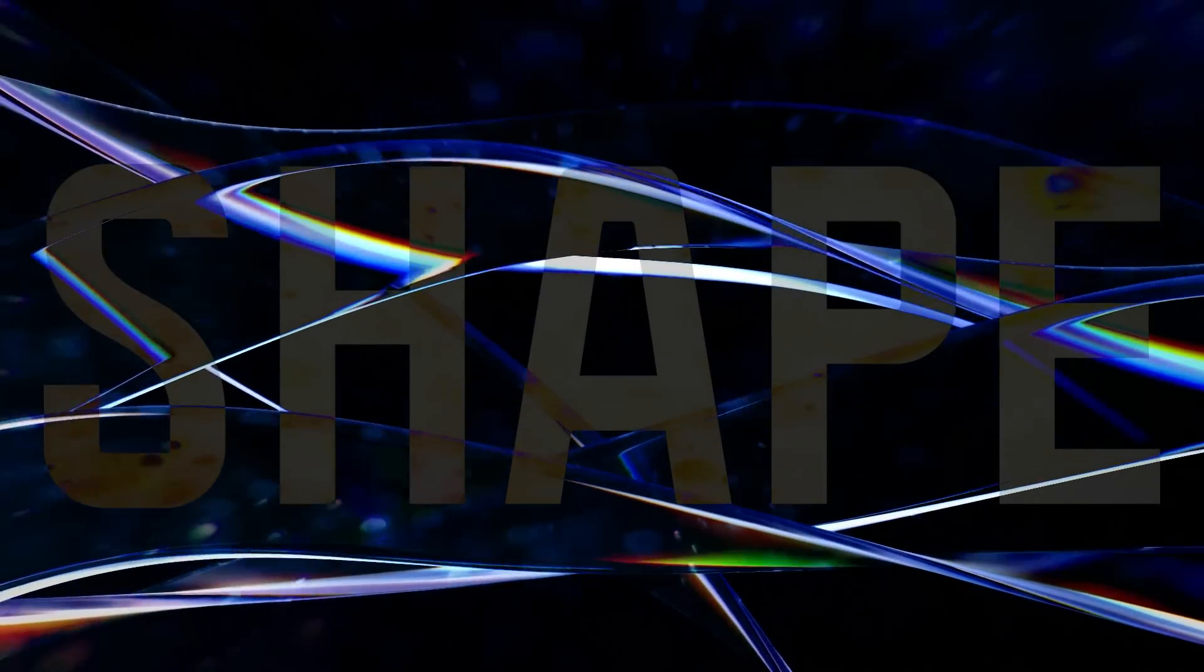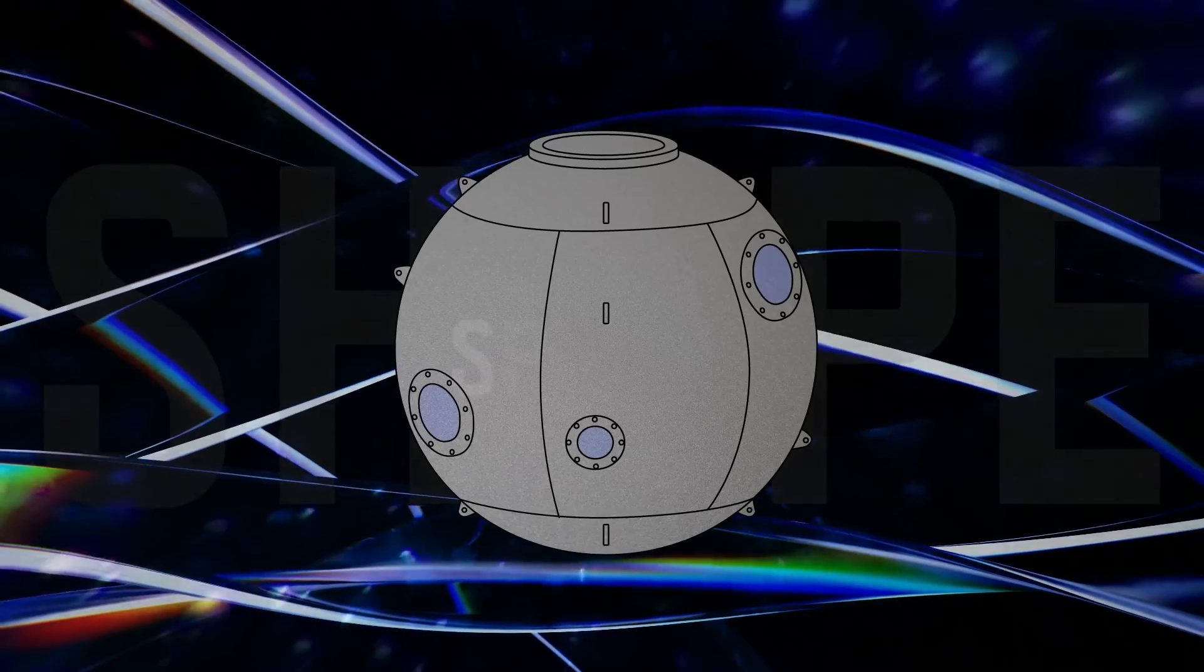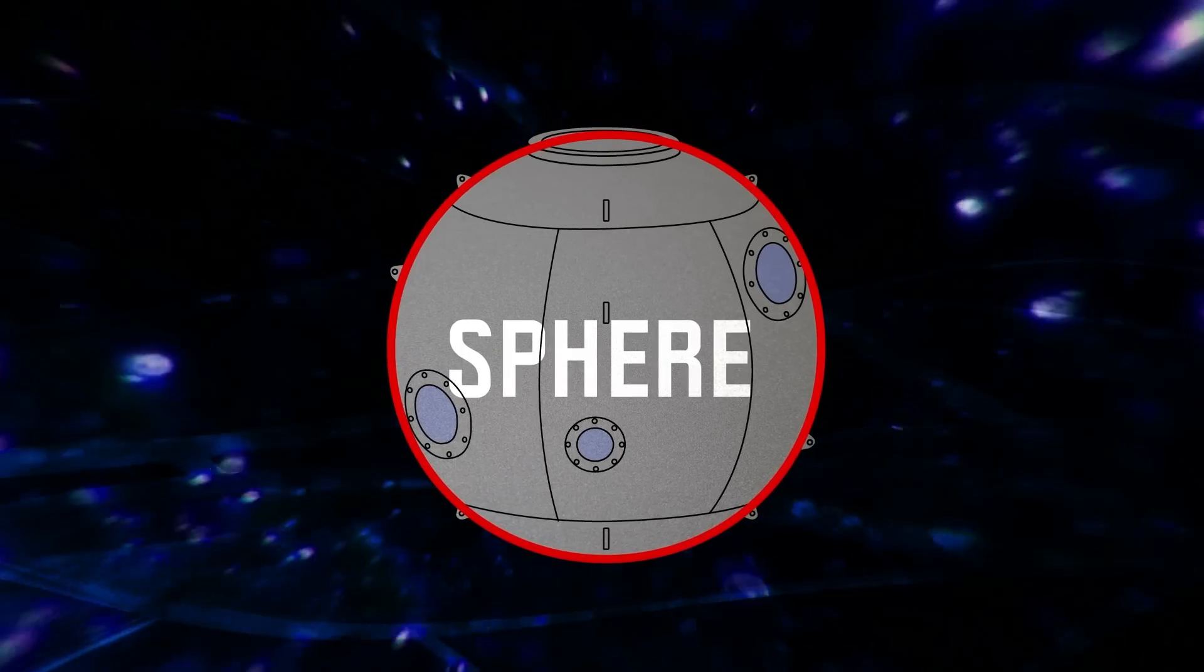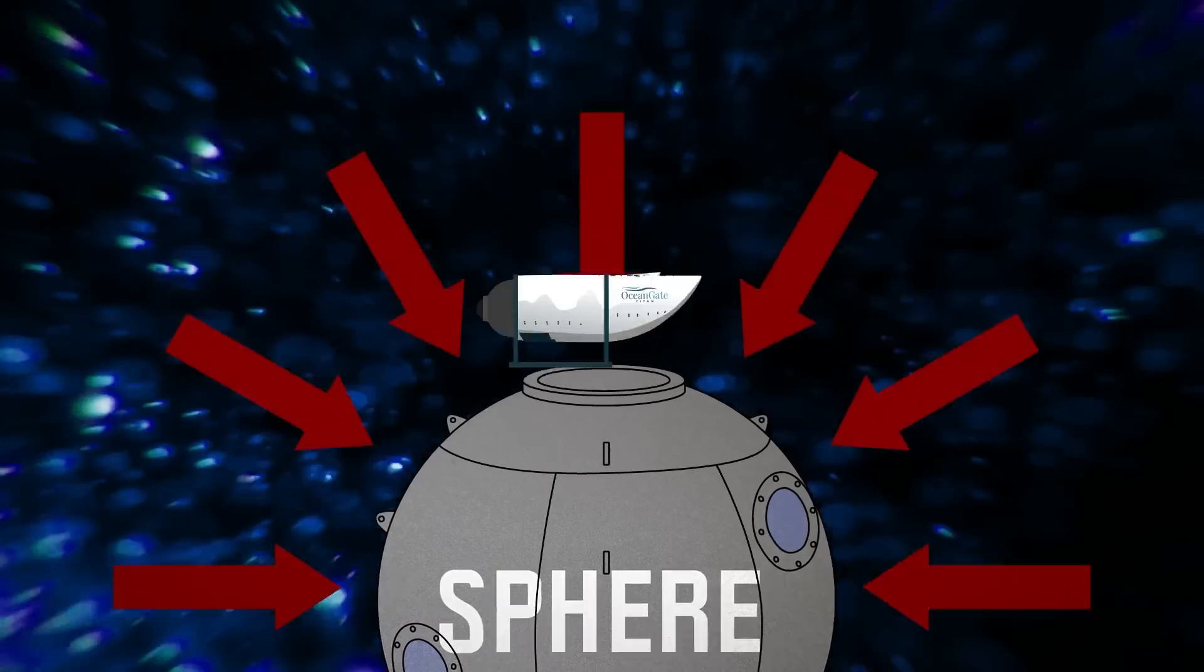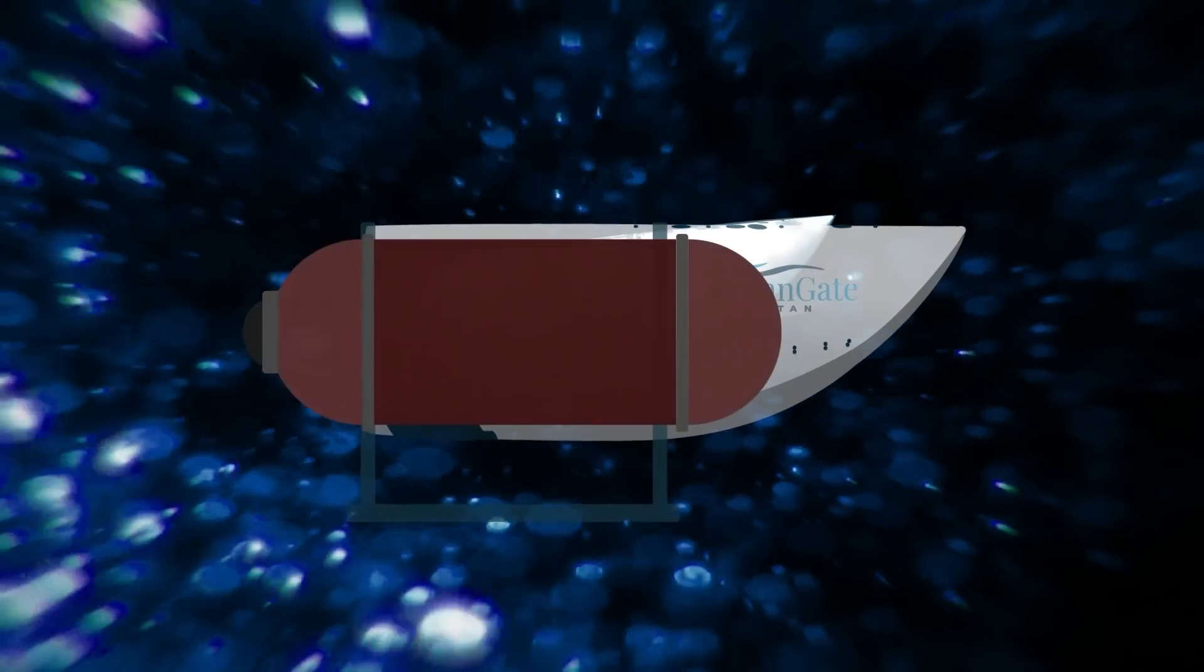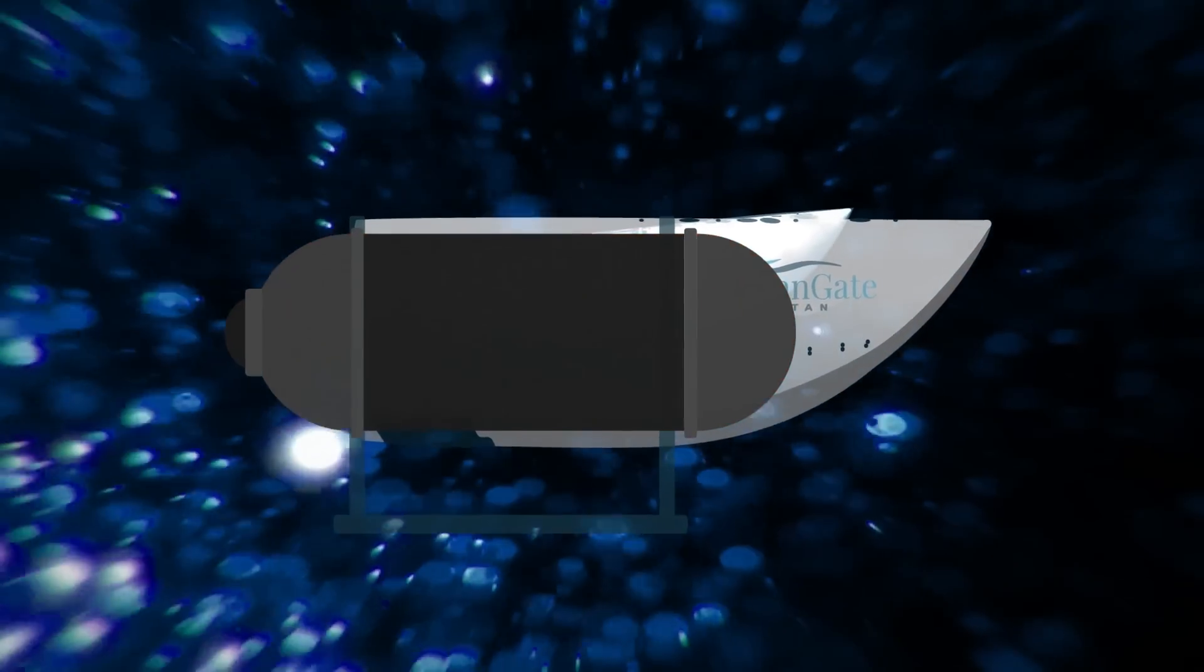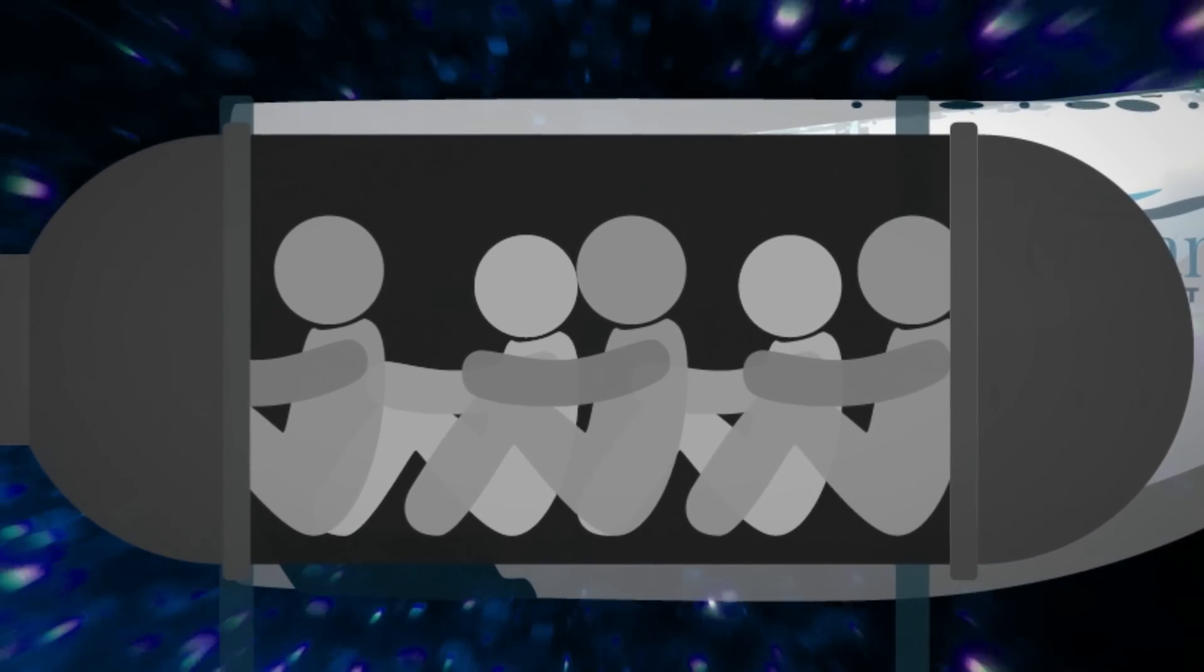As far as shape, usually, deep submergence vehicles have a sphere-shaped crew compartment, which helps spread the water pressure evenly across the hull. On the other hand, Stockton went for the cylinder-shaped hull since he needed more passenger space. With the suboptimal shape, the overall strength of the construction decreased.